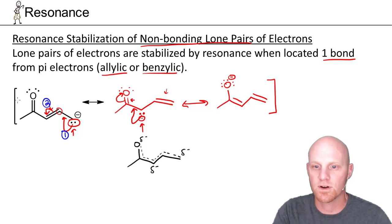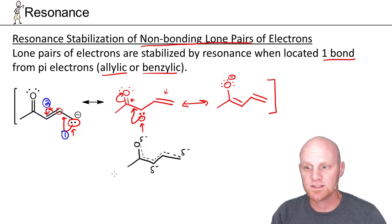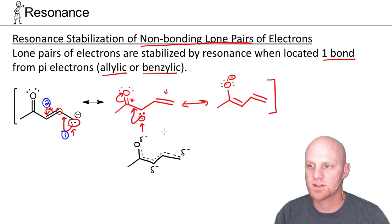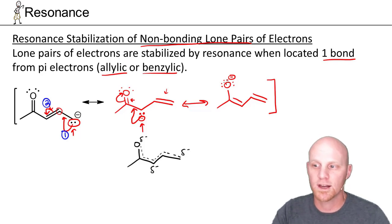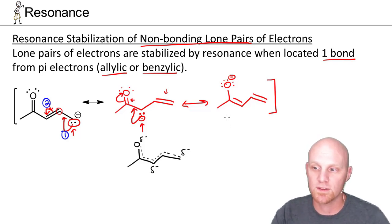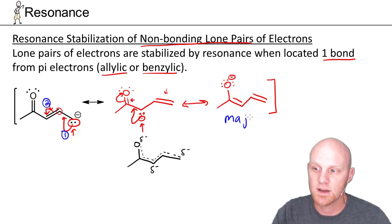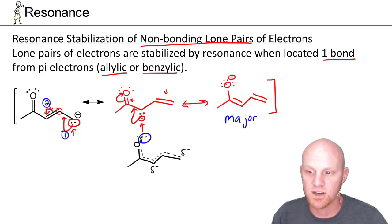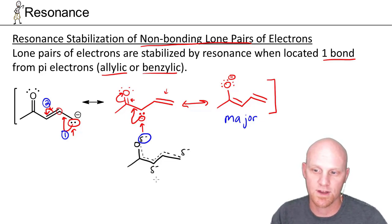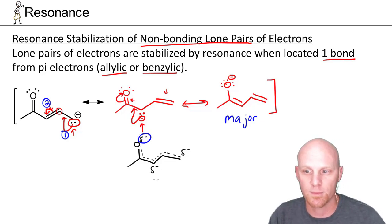We can identify which is the most stable structure: a negative charge on one carbon, on the other carbon, or on the oxygen. The negative charge on the more electronegative oxygen wins hands down — that's our major resonance contributor. The partial negative charge on the oxygen is therefore greater than the partial negative charge on either of the two carbons.